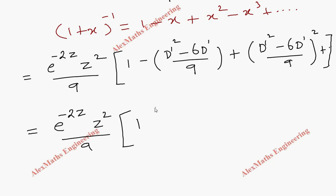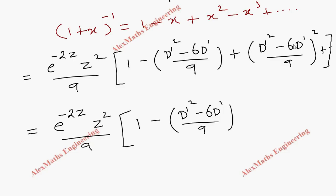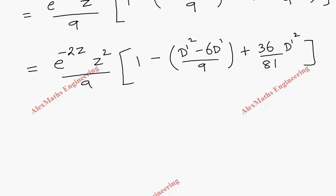Expanding the square term (minus x)²: a² gives D' power 4, which we don't want. The 2ab term gives 2·D'²·6D', producing D' cubed — we don't want that either. The last term gives 36/81·D'², which we keep. So the expansion reduces to 1 minus (D'² minus 6D')/9 plus 36/81·D'², retaining only the terms that survive when acting on z².